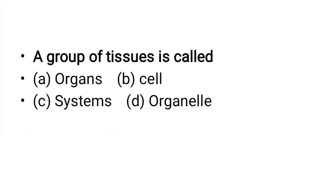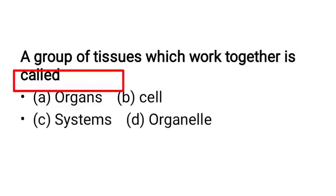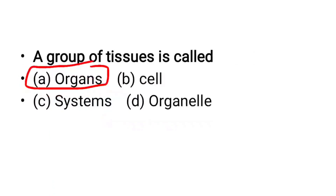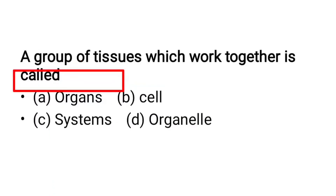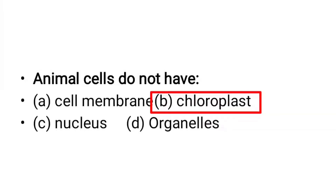MCQ: A group of tissues forms an organ — the answer is organ. MCQ: Animals do not have — the answer is chloroplasts. Chloroplasts are present in plant cells, not in animal cells.